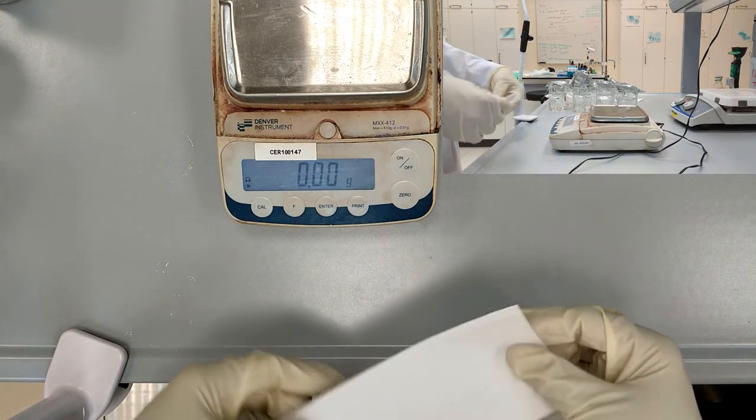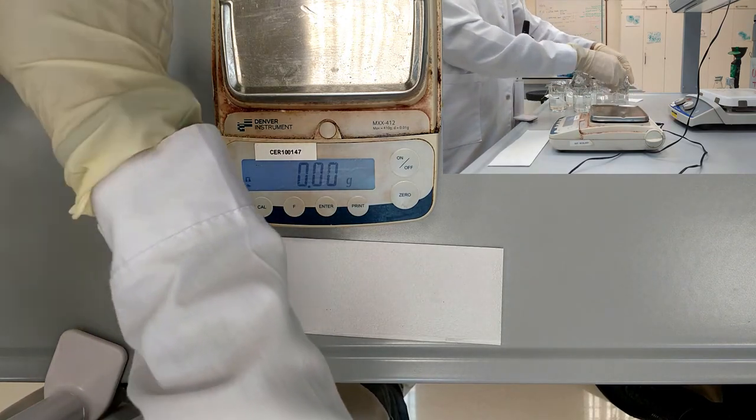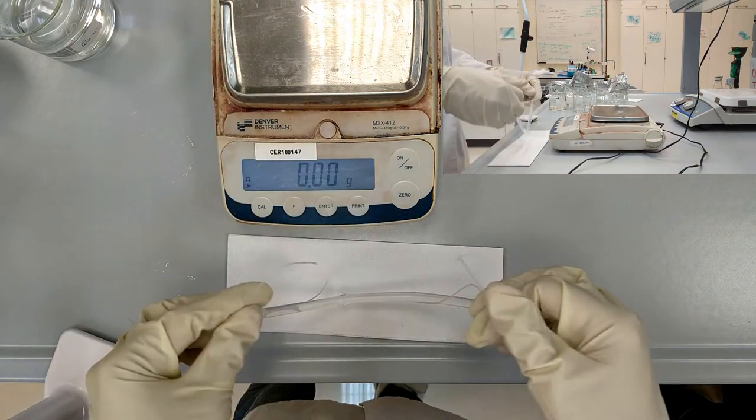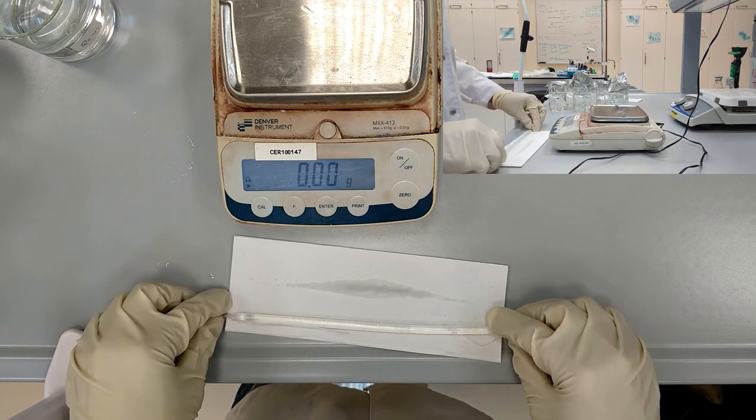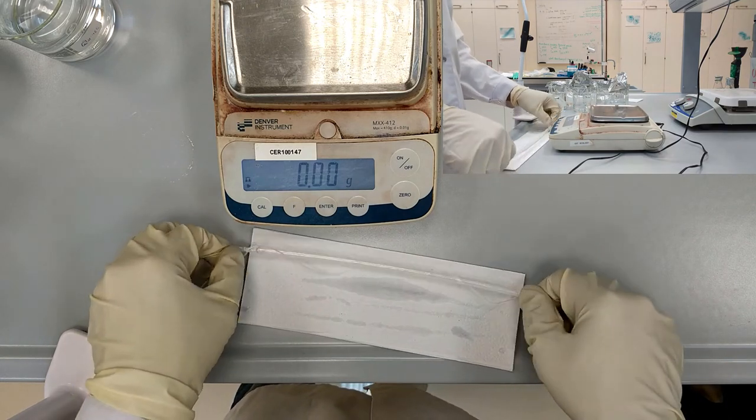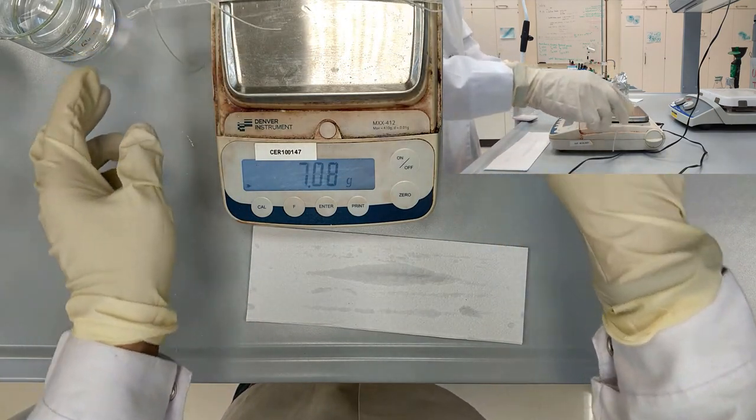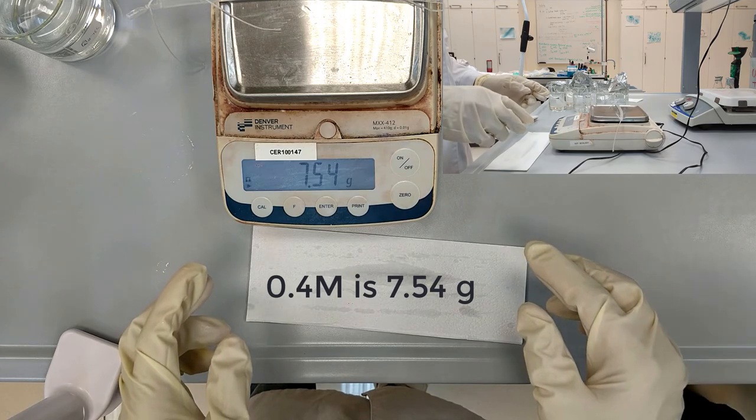Finally, we have the lowest concentration glucose solution in the tube. Its mass is 7.54 grams.